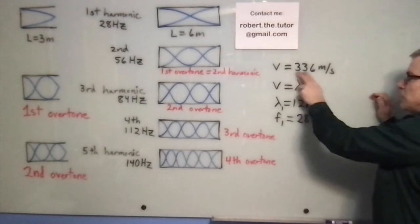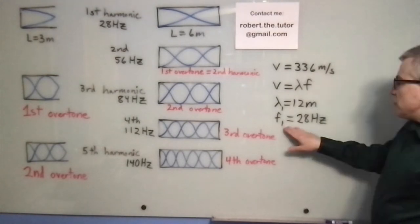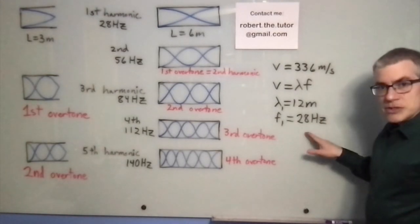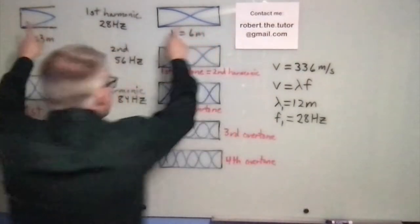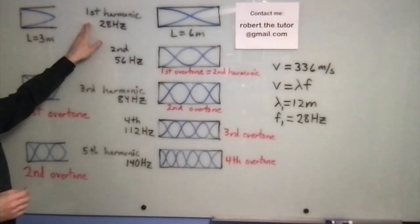V equals lambda f. I'm going to use V as 336 meters per second, just so it comes out nice and even. The frequency of the fundamental would be 28 hertz. So both of these pipes would play the same note, and that is called the fundamental, or the first harmonic.